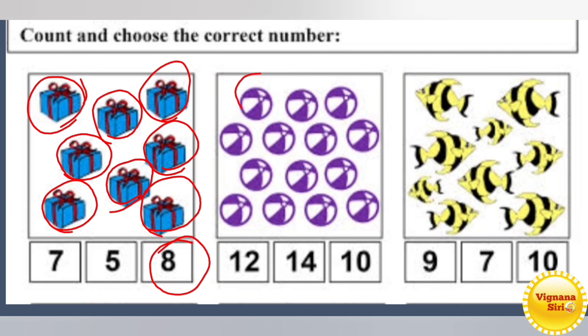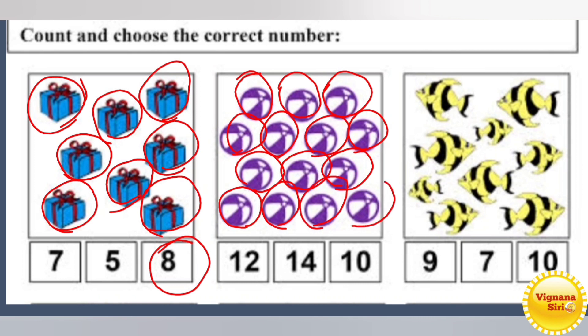Now we will see how many balls are there. Shall we start? 1, 2, 3, 4, 5, 6, 7, 8, 9, 10, 11, 12, 13, 14. Totally, so what number we have to circle? Number 14.